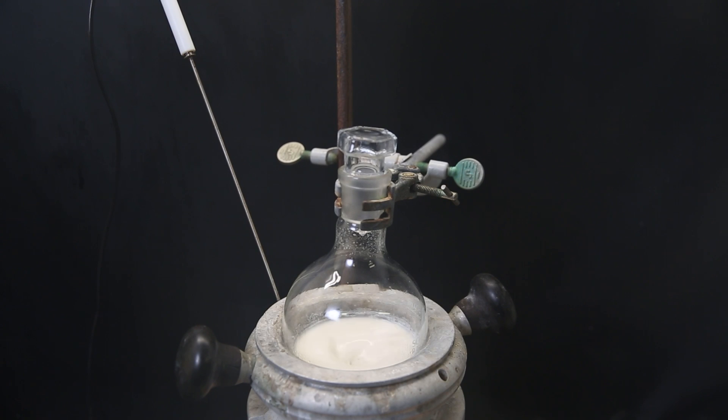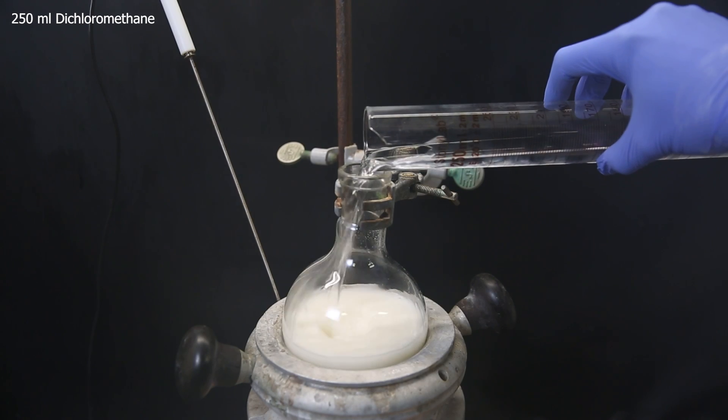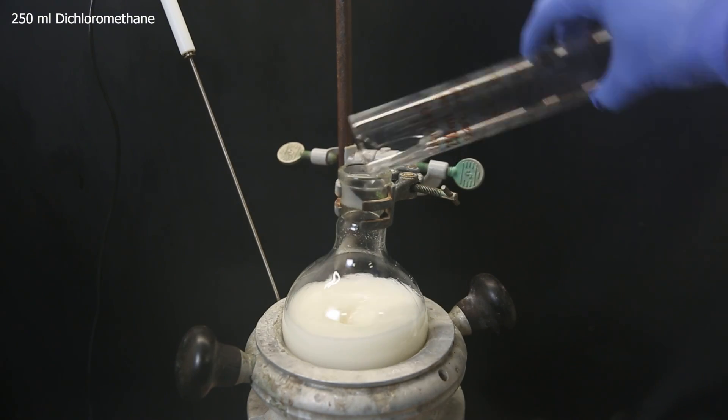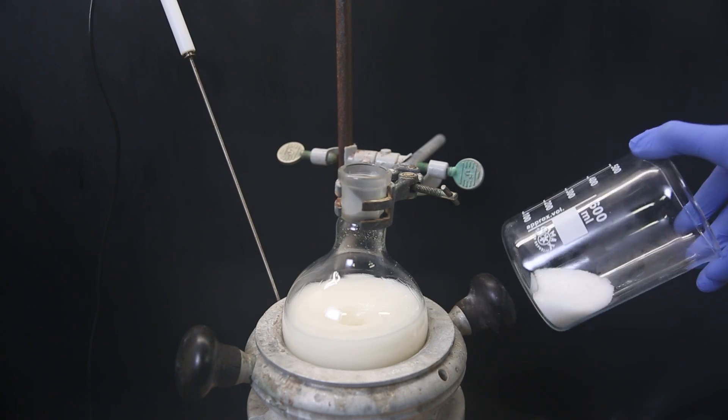When I come back, it seems some stuff has precipitated. I dilute this mixture with 250 ml of the solvent dichloromethane. I then weigh out a small excess of sodium hydroxide compared to the acetic acid I added before and dissolve it in some water.